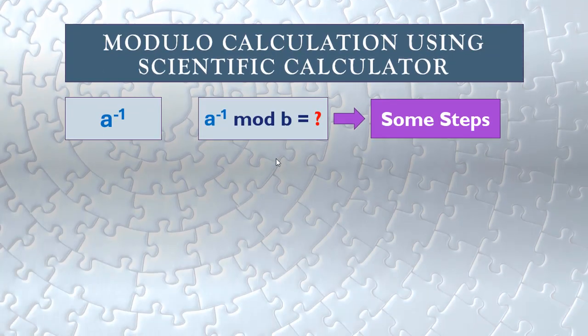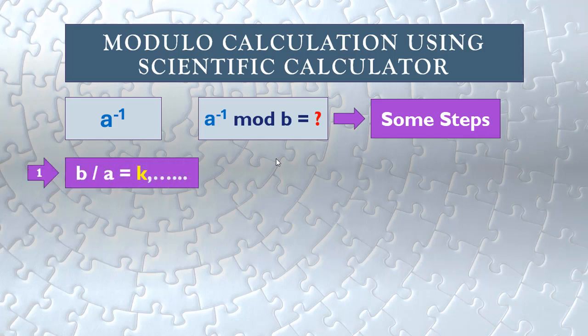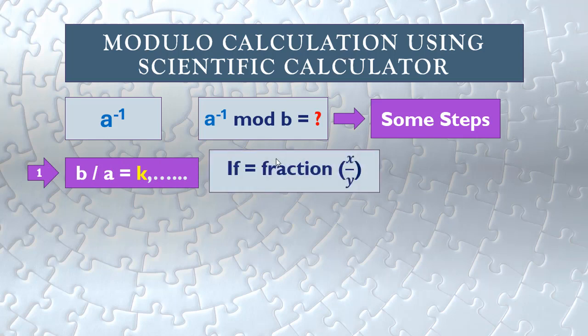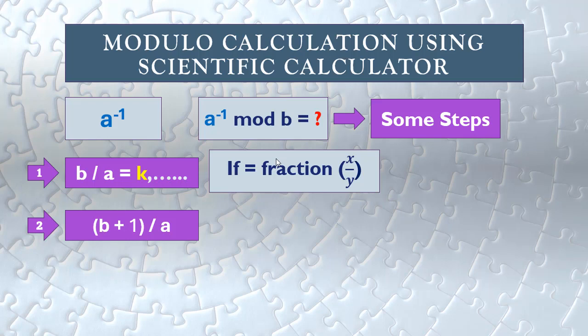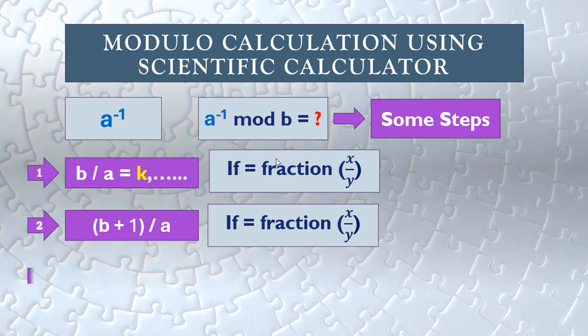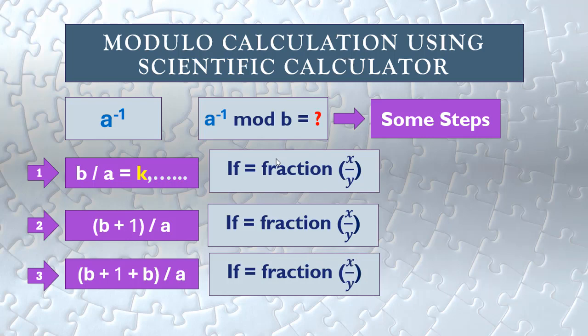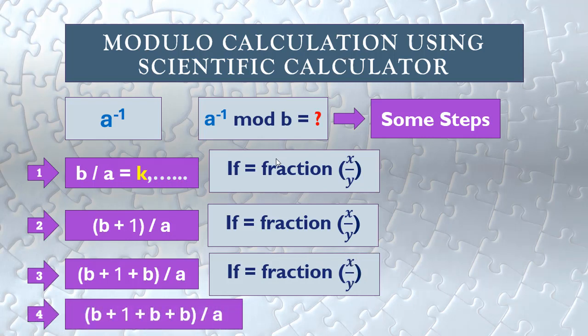The last case: if we want to calculate the multiplicative inverse modulo for a mod b, the first step is to divide b by a — not a by b. If the result is a fraction, go to the second step: add b. If it's still a fraction, add another b. As long as the result is a fraction, keep adding b.